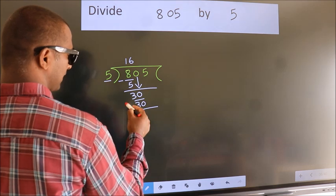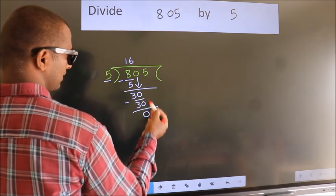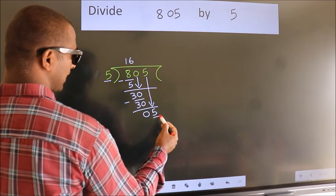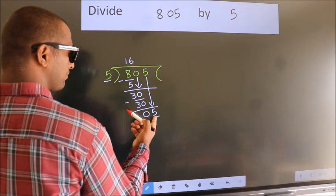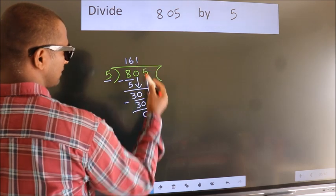Now, we subtract. We get 0. After this, bring down the beside number. So, 5 down. So, 5. When do we get 5 in 5 table? 5 once 5.